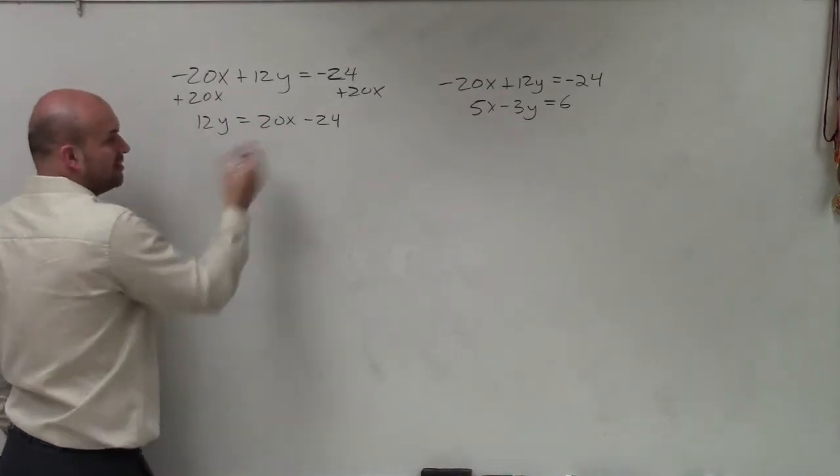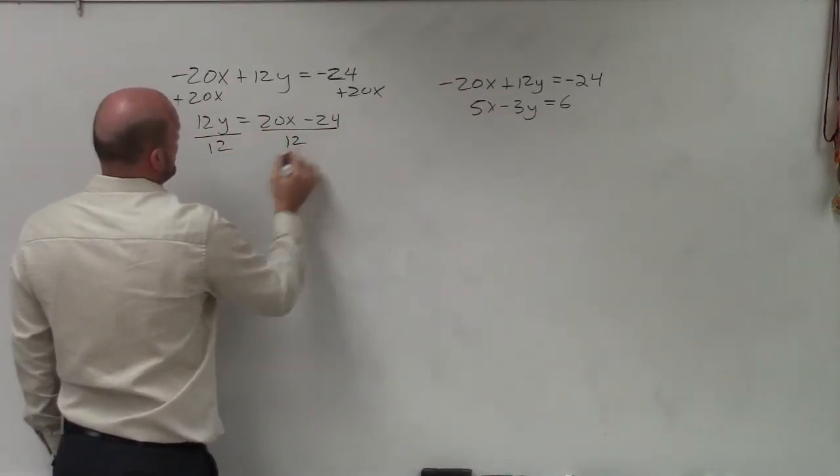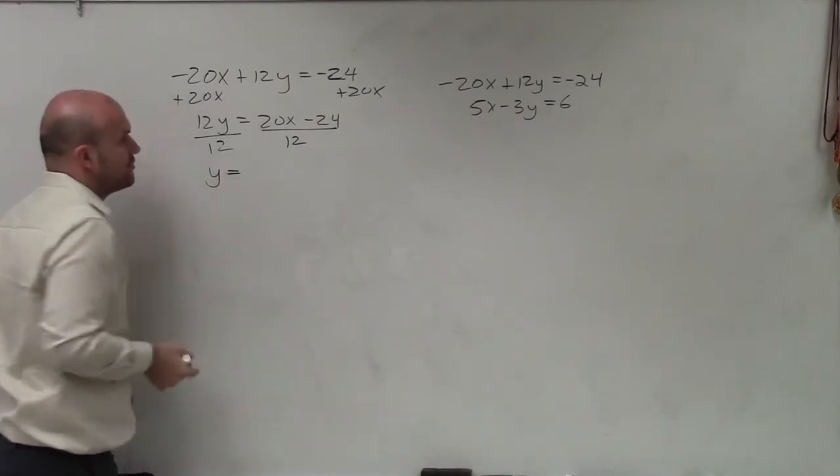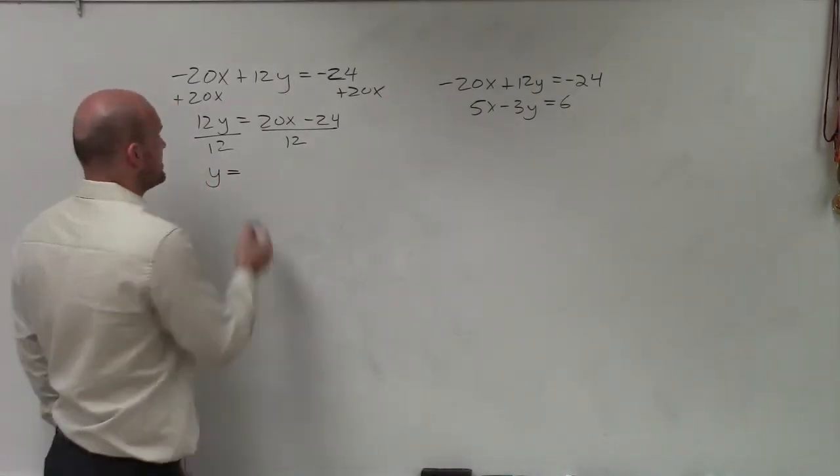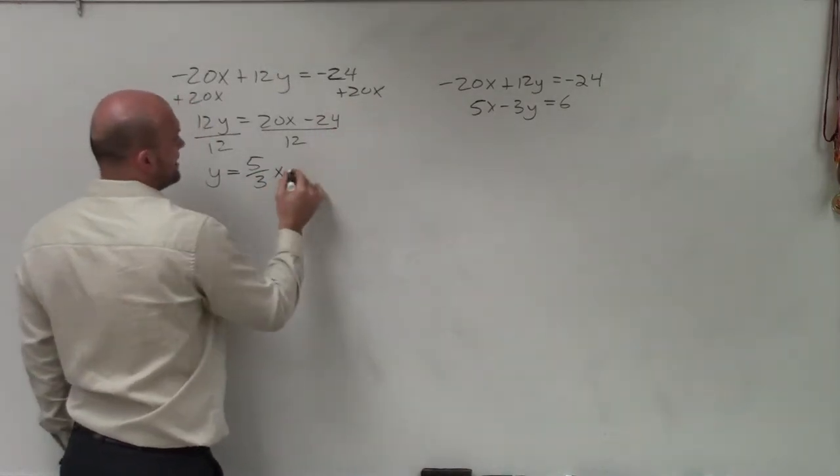Again, I'm going to write my variable in front of my constant. Then I'll divide by 12 here. And here I have y equals, now 20 over 12, you've got to determine what value is going to come in the same. So that would be 5 thirds x. And this would be a negative 2.